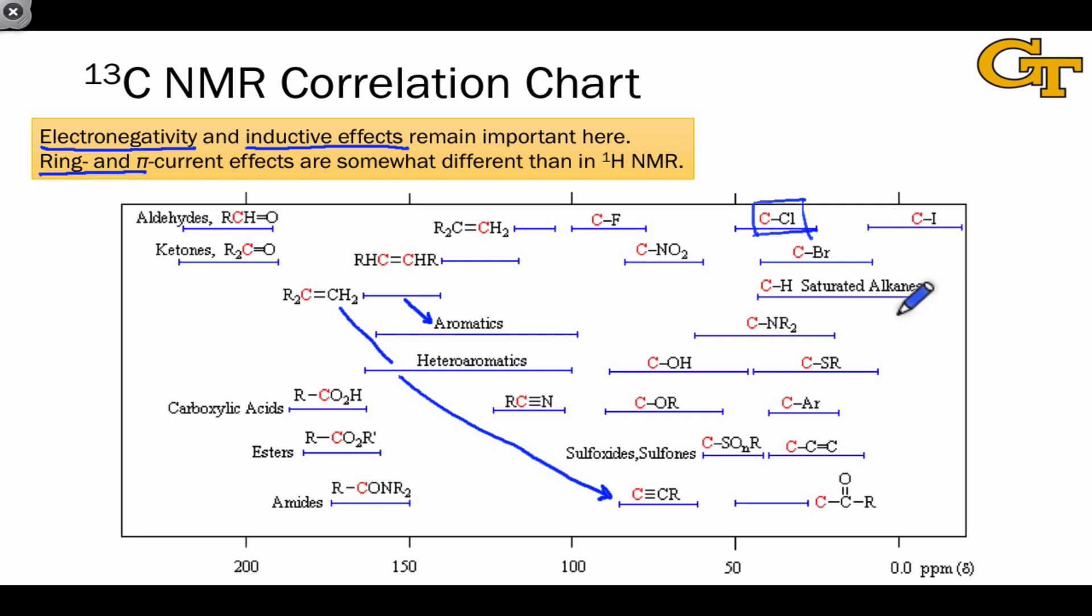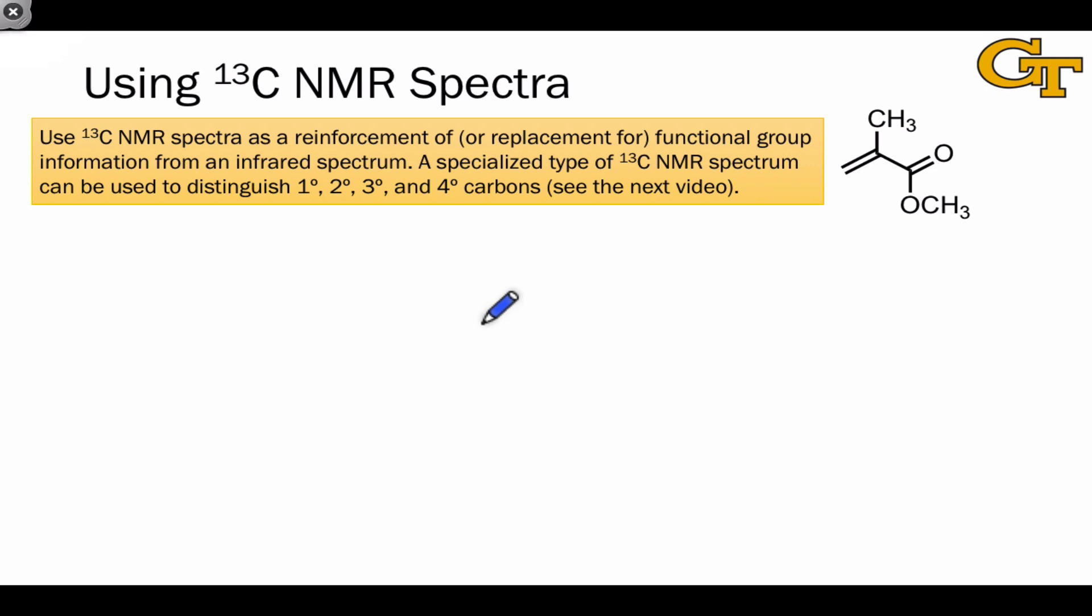Because carbon-13 NMR spectra don't contain any coupling information, they really can't give us any information about how carbons are connected within an organic structure. And that's a limitation of carbon-13 NMR. At the same time, we can use it as a reinforcement of, or in many cases a replacement for, functional group information that would come from an infrared spectrum. And we can also get information through either 2D or DEPT spectra about how many hydrogens are connected to each of the carbons in a carbon-13 NMR spectrum.